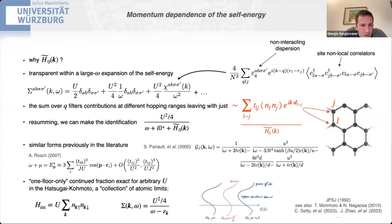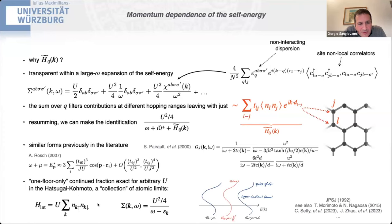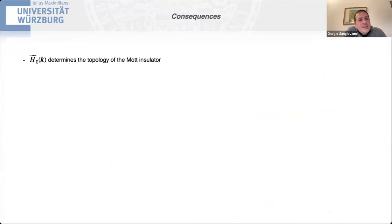I also mention the Atsugi-Kamoto interaction, which is particularly unusual physically — it is infinite-range yet entirely local in k-space. Analytically this is nice because it allows exact results; in particular the one-pole expression for the self-energy becomes exact in that case, though this is specific to that model. Nonetheless the consequences of this h̃₀ allow us to classify Mott insulators more precisely.